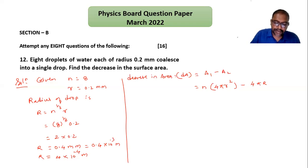Let me substitute: 4 times 3.142, n is 8, multiplied by small r which is 0.2 mm, so 0.2 times 10 raised to minus 3 or 2 times 10 raised to minus 4 meters, squared, minus capital R which is 4 times 10 raised to minus 4, bracket squared.